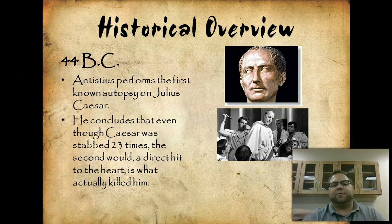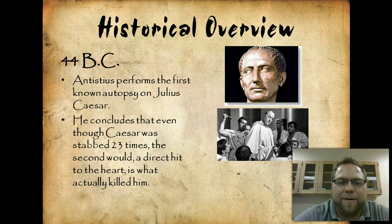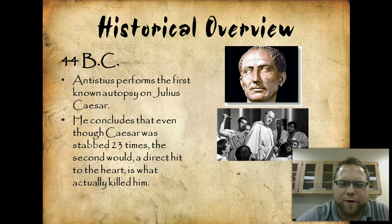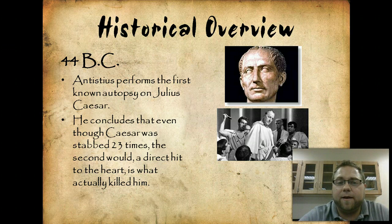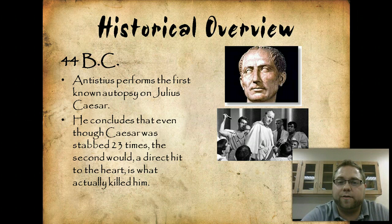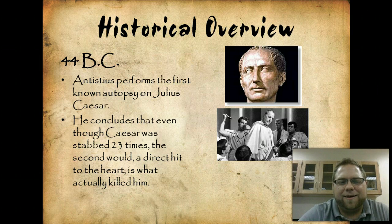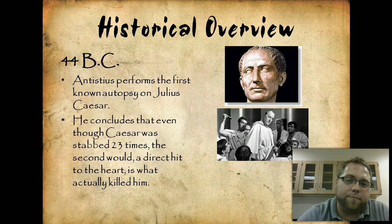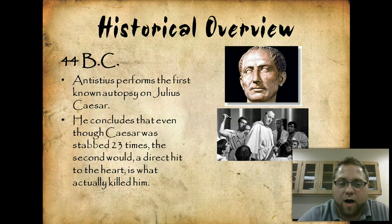Here's our historical overview — we're going to go all the way back to 44 BC. We have a guy named Antistius who was the personal physician to Julius Caesar. If you know anything about Caesar, he kind of met a pretty bloody end at the hands of his good friend Brutus, as we see here in the Shakespearean lore. Antistius performed the first known legitimate autopsy, and he was able to come to the conclusion that Caesar was stabbed 23 times — a little bit of overkill, no pun intended. He determined that it was actually the second blow of the knife directly into the heart that actually killed him; all the other wounds were superficial. That second wound is what actually killed Caesar.